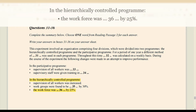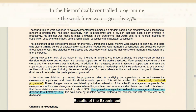Question number 36: in the hierarchically controlled program, the workforce was [dash] by 25%. Hierarchically controlled program ke neeche likha gaya hai: the general manager then ordered the managers of these two divisions to cut staff by 25%. General manager ne managers ko order diya ki apna staff 25% kam kiya jaye. Toh workforce ko 25% se cut kiya gaya. Answer: cut.